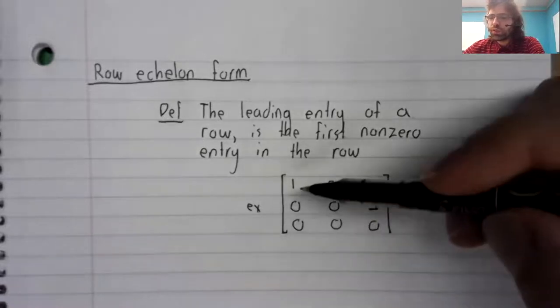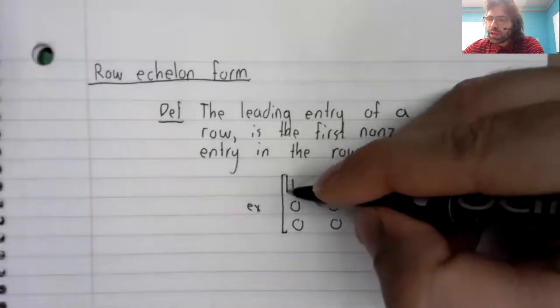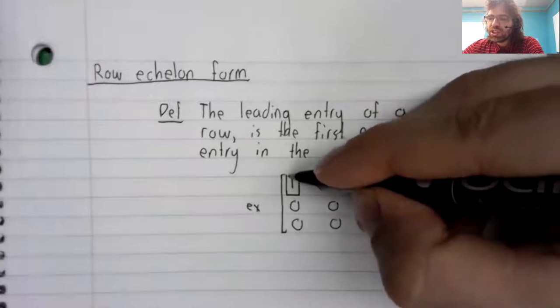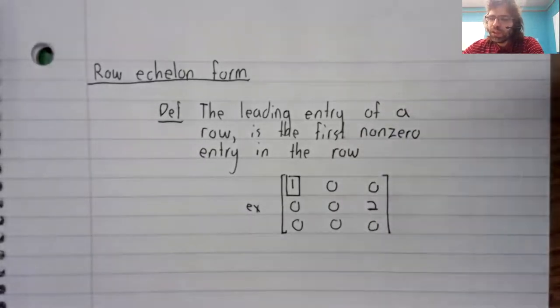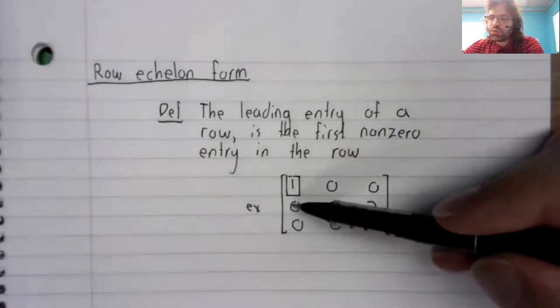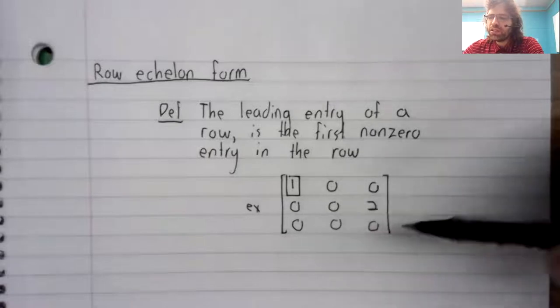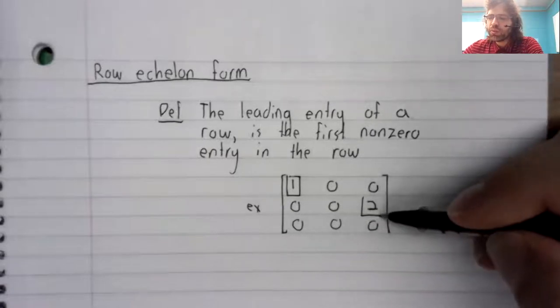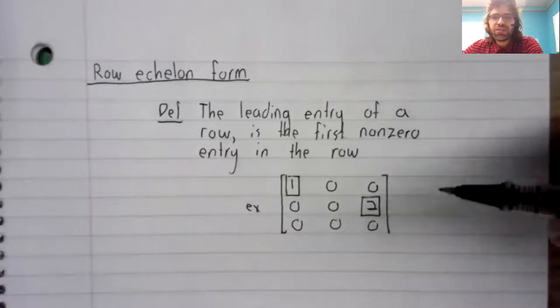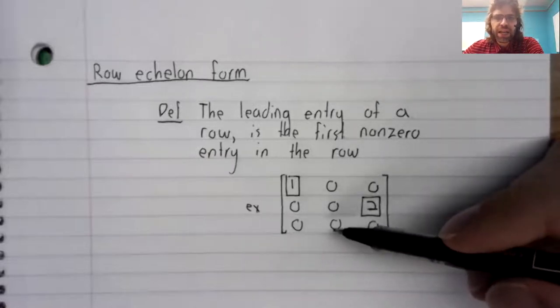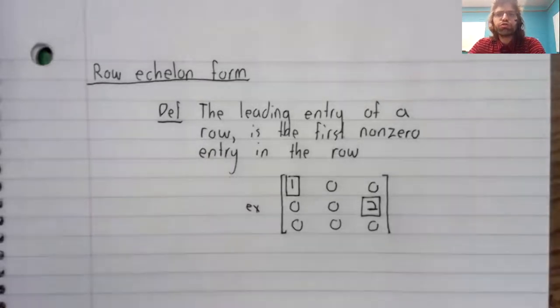the first row has this as its leading entry. The second row, reading from left to right, the first non-zero entry is this. The third row doesn't have a leading entry.